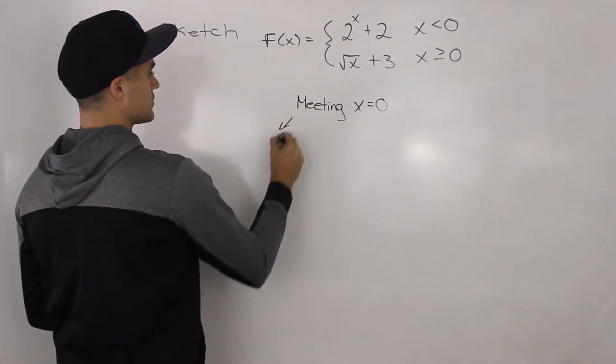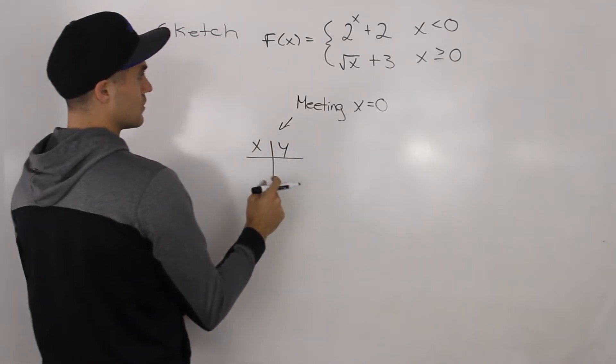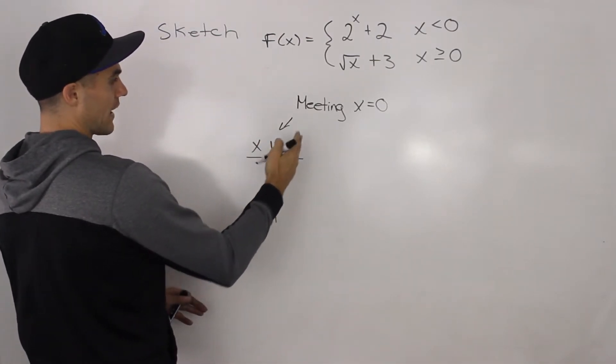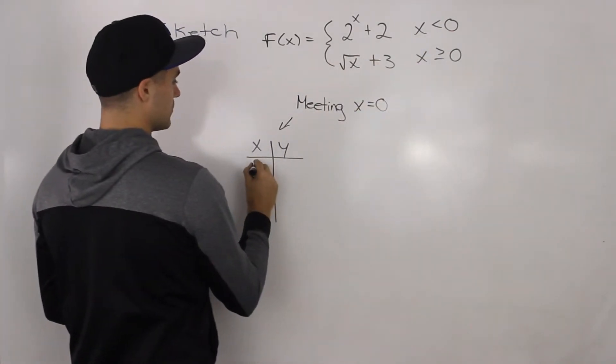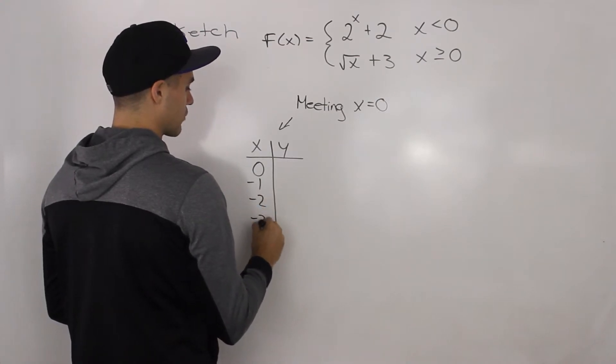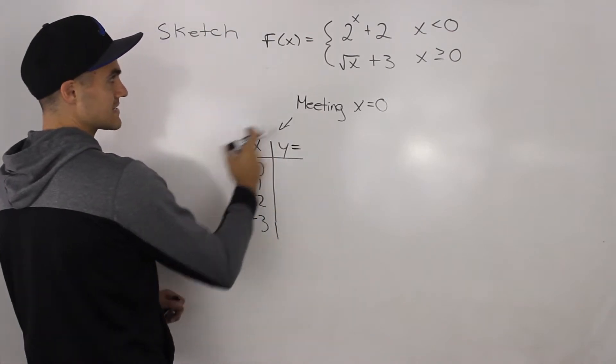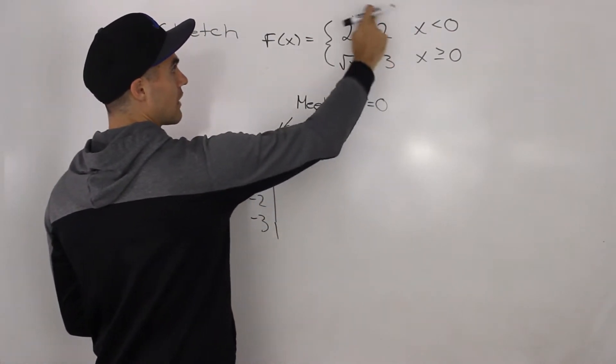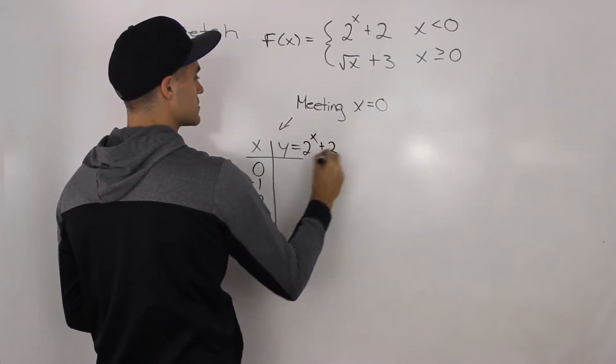You want to make two table of values. You want to make it for x values that are less than zero. So we would put zero here and then negative one, negative two, negative three. The y values, when x is less than zero, are defined by this equation here, 2^x + 2.